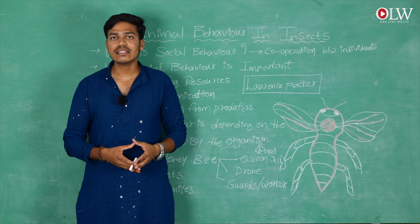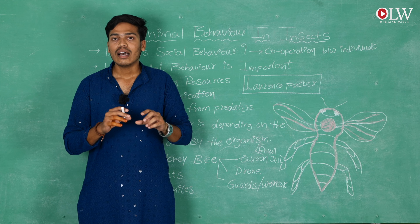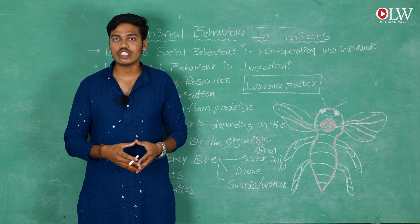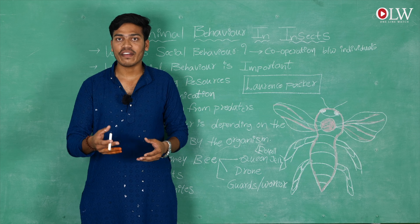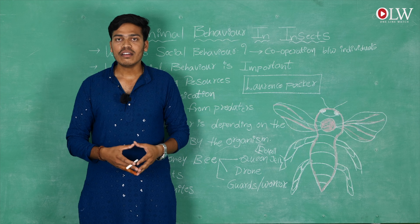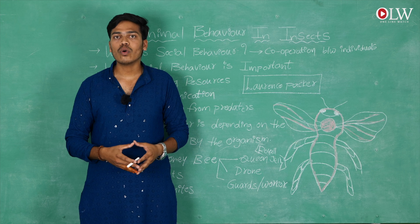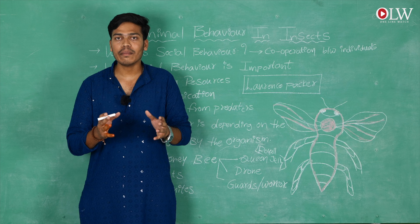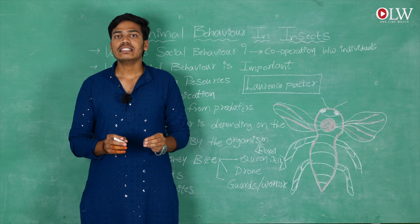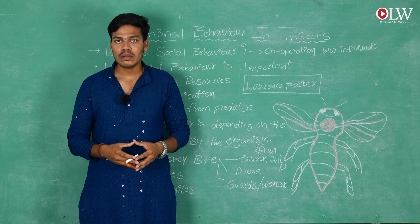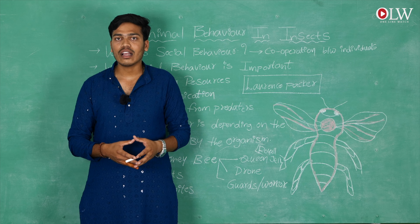The queen bee has a large abdomen, which means it produces a large amount of eggs. The only function of the queen bee is to produce babies — to produce more eggs and larval forms. That is its main function. It participates in the reproduction process only, and all remaining bees are under the control of this queen bee.